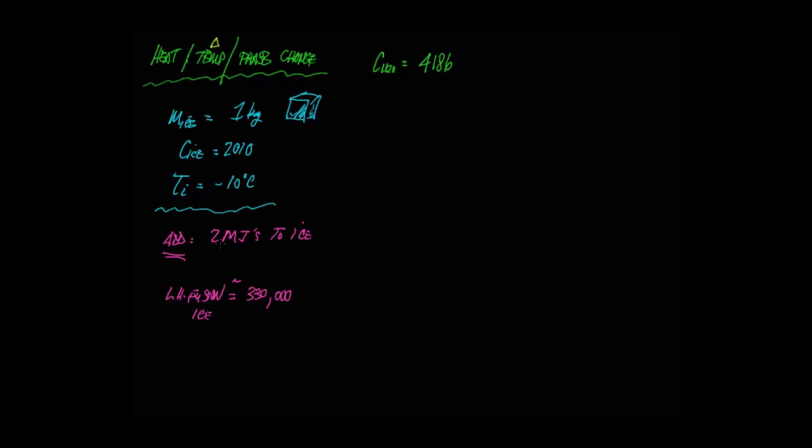What we're going to do is add 2 megajoules to it. 2 mega, when I hit the mega bucks or the mega lottery, that's million, so that's 2 million joules we're going to add into that ice to see if it raises the temperature.